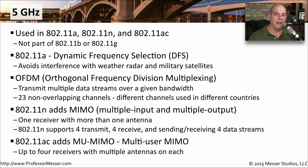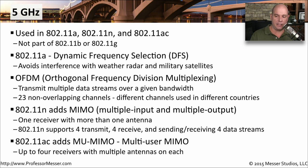802.11ac takes this another step further with multi-user MIMO, or MU-MIMO. With multi-user MIMO and 802.11ac, you can have up to four separate receivers inside of an access point with multiple antennas on each of those. And with that particular architecture, you're able to get multi-gigabit speeds out of these wireless networks on 802.11ac.